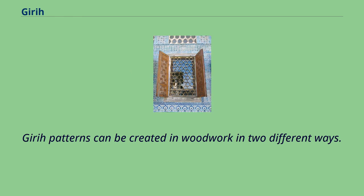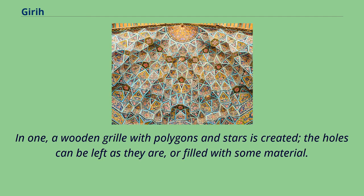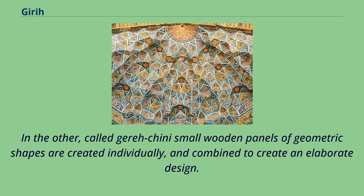Girih patterns can be created in woodwork in two different ways. In one, a wooden grill with polygons and stars is created; the holes can be left as they are or filled with some material. In the other, called jali, small wooden panels of geometric shapes are created individually and combined to create an elaborate design.